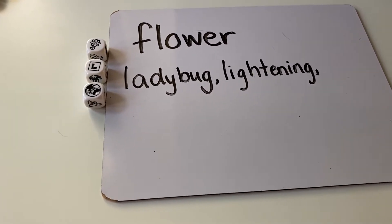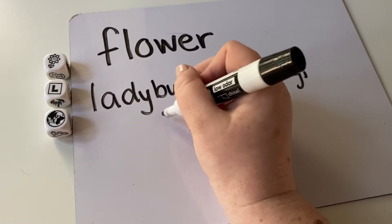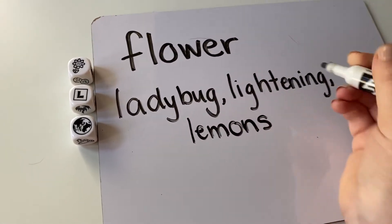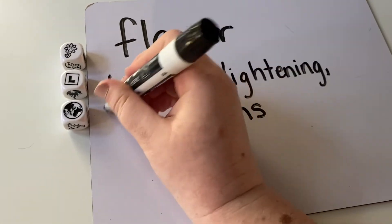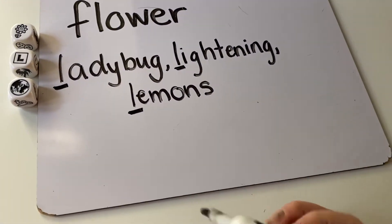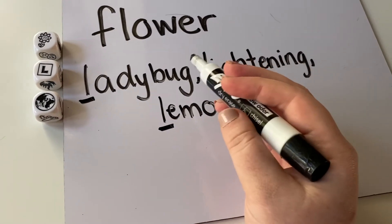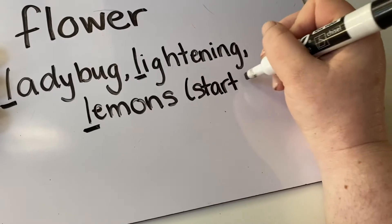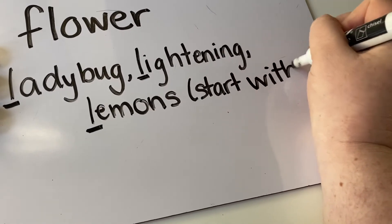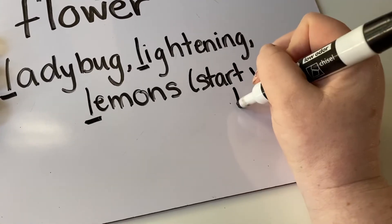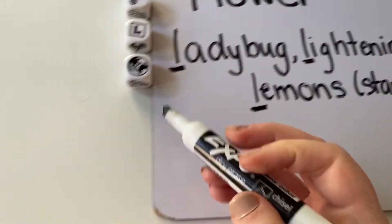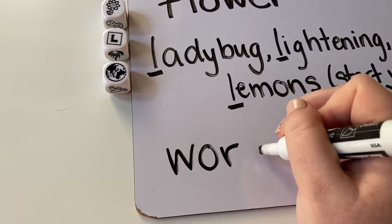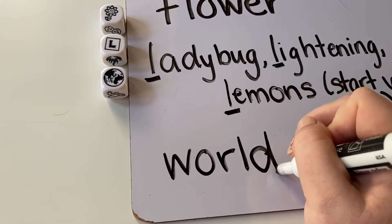I'm being put on the spot! I'm trying to think of one more — lemons. Because that's all I can think of at the moment. Those are just some examples, but they all start with the letter L. So they need to start with L. And then the last one is world.